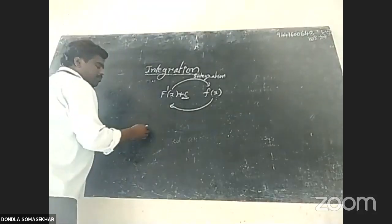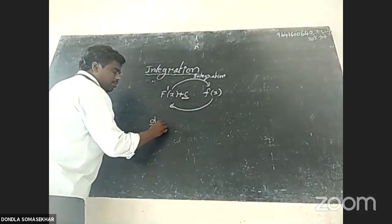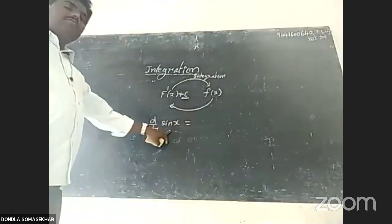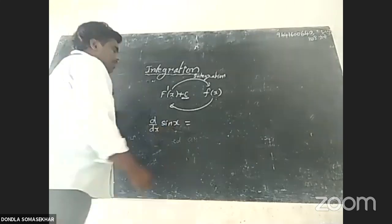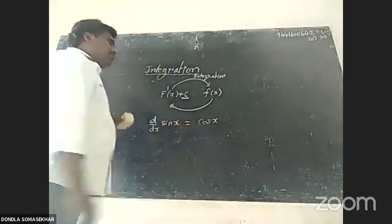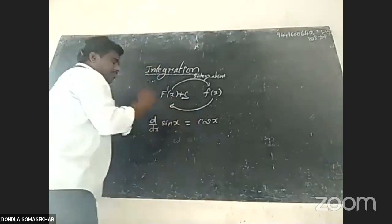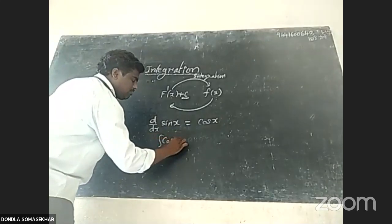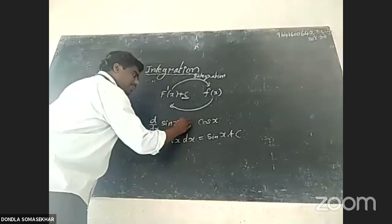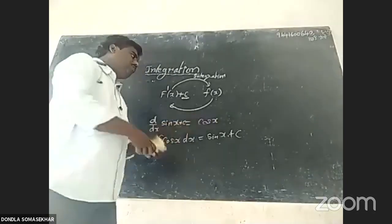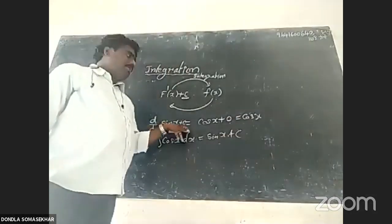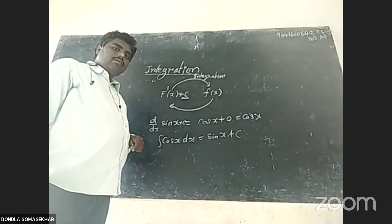Let's take some examples. d by dx of sin x equals cos x. So the anti-derivative: integral of cos x dx is equal to sin x plus c. The derivative of sin x plus c gives cos x plus 0, which equals cos x. That is why we write plus c here.